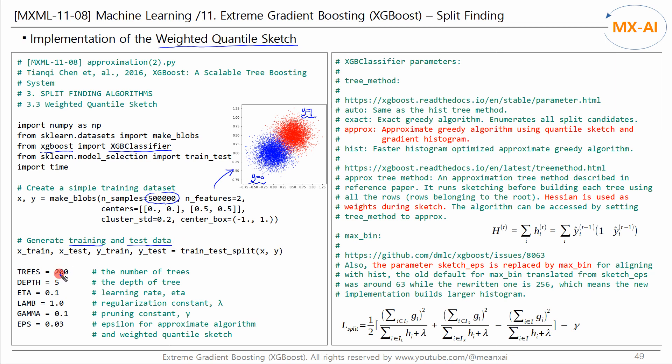The total number of trees is set to 200, and the depth of each tree is set to 5. The learning rate eta, the regularization constant lambda, and the pruning constant gamma are set as follows. And the epsilon is set to 0.03, resulting in 33 buckets. The number of buckets is 1 over epsilon.